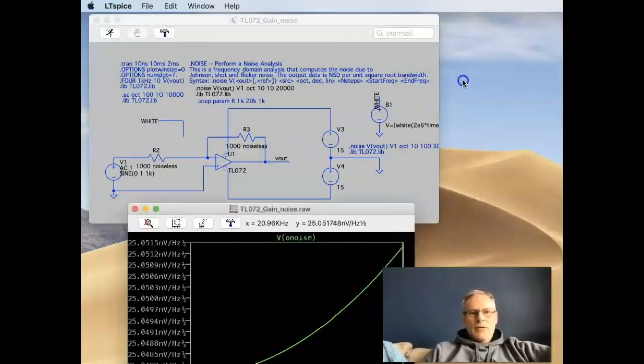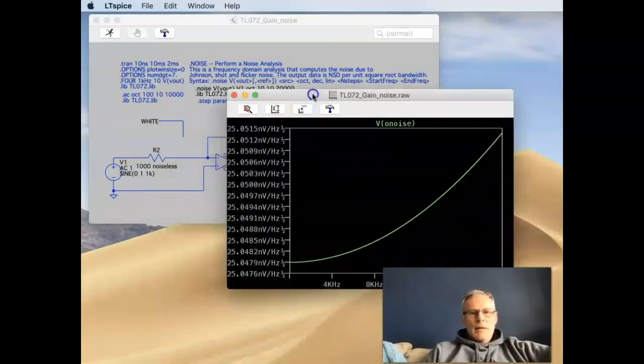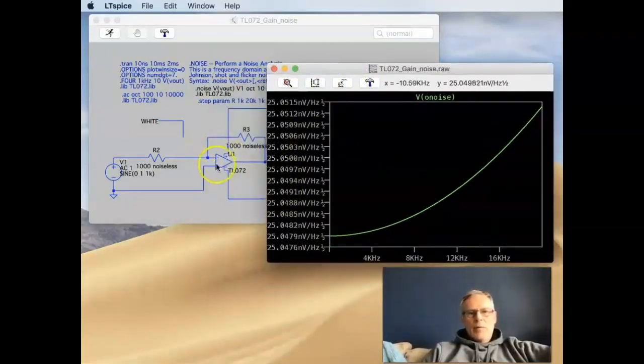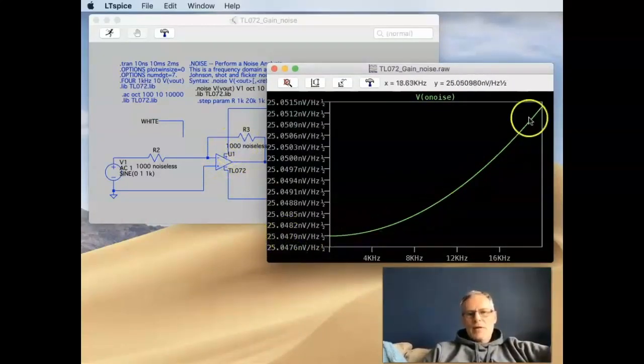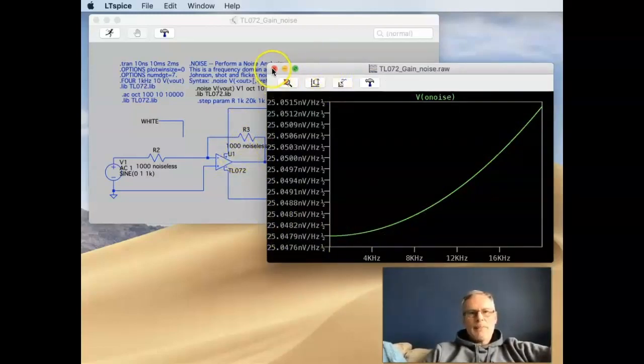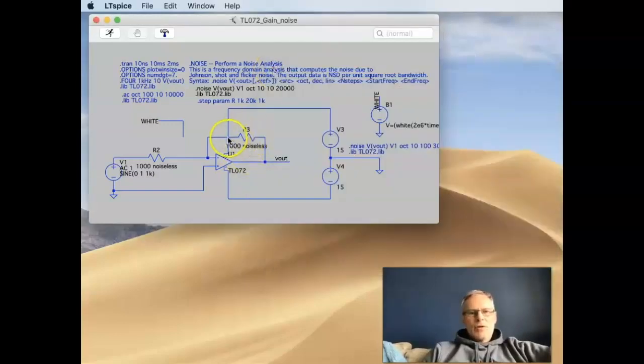This value, this noise, is now only due to the op amp itself. So you can do comparisons on the effect of the resistor changes. So you can get this as a sort of a baseline, then do a run a new analysis and see what the effect of the large value resistors are. So that's the sort of noise analysis used in the dot noise command.